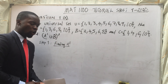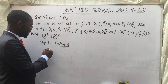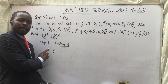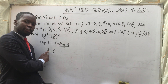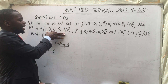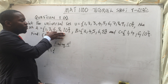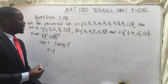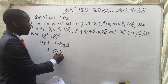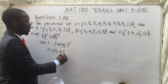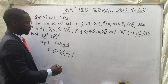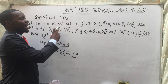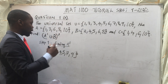Let's calculate A complement. A complement means each and every element which is not in set A but is in the universal set. As you can see, the elements not in set A are: 2, 4, 5, 7, and 9. These are what we call A complement.